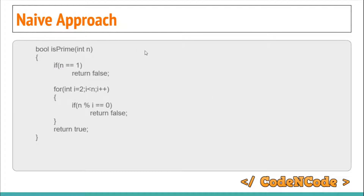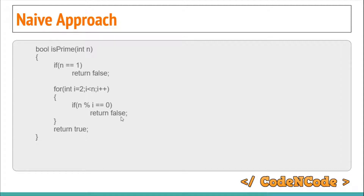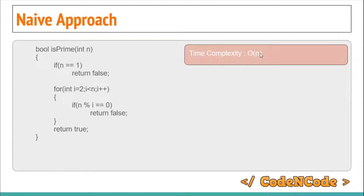The naive or brute force approach would be to run a loop from 2 to n minus 1. If the number is 1 we return false, because 1 is neither prime nor composite. Otherwise we run a loop from 2 to less than n and see if any i divides n. If it divides, return false; otherwise return true. The complexity of this algorithm is O(n), that is linear. So let's try to improve upon this running time.